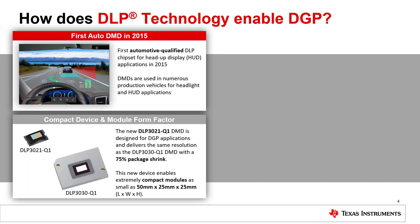Texas Instruments has released the DLP 3021-Q1 Automotive Digital Micromirror Device, or DMD, designed for dynamic ground projection. This DMD has enabled a package shrink of 75% over the DLP 3030-Q1 Automotive DMD, which is ideal for the DGP application as these modules must be small enough to enable mounting locations anywhere on the vehicle. The package shrink enables dynamic ground projectors with DLP technology to have an approximate form factor of 50 millimeters by 25 millimeters by 25 millimeters — about the size of your thumb.